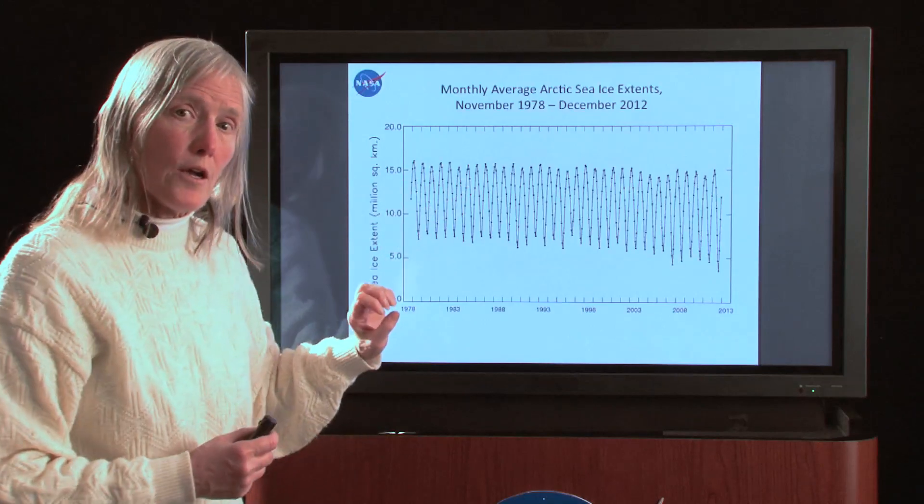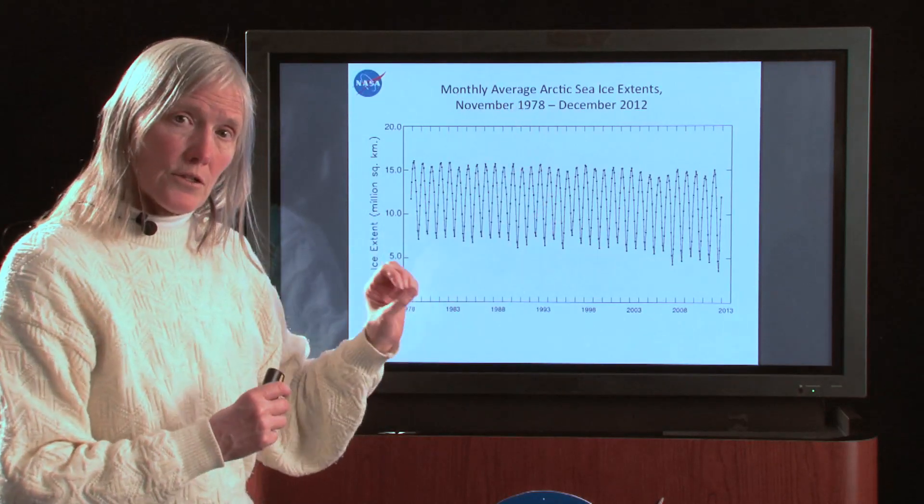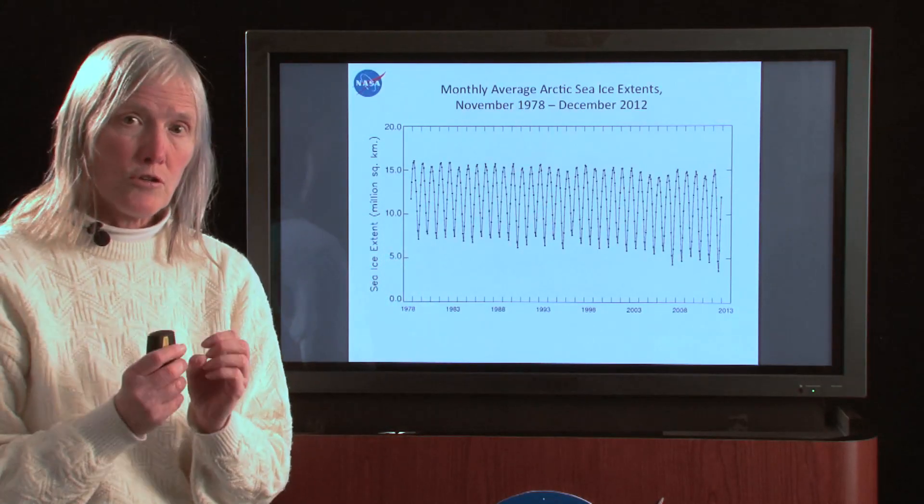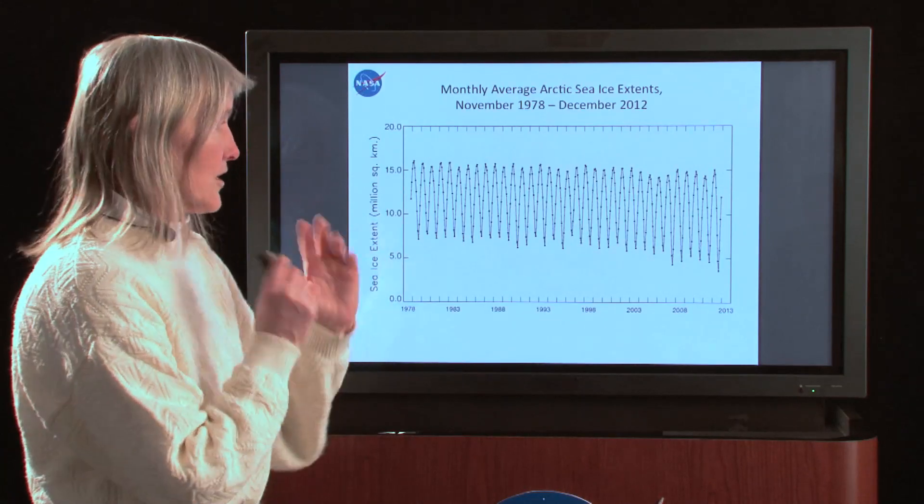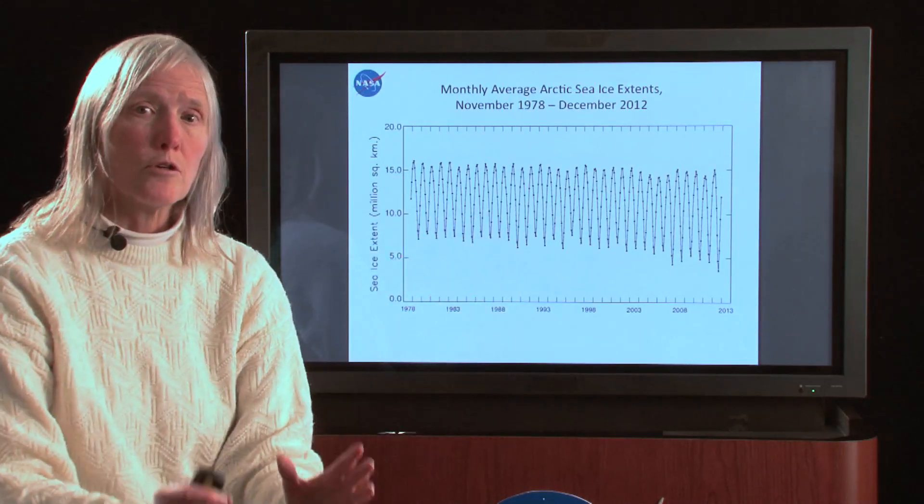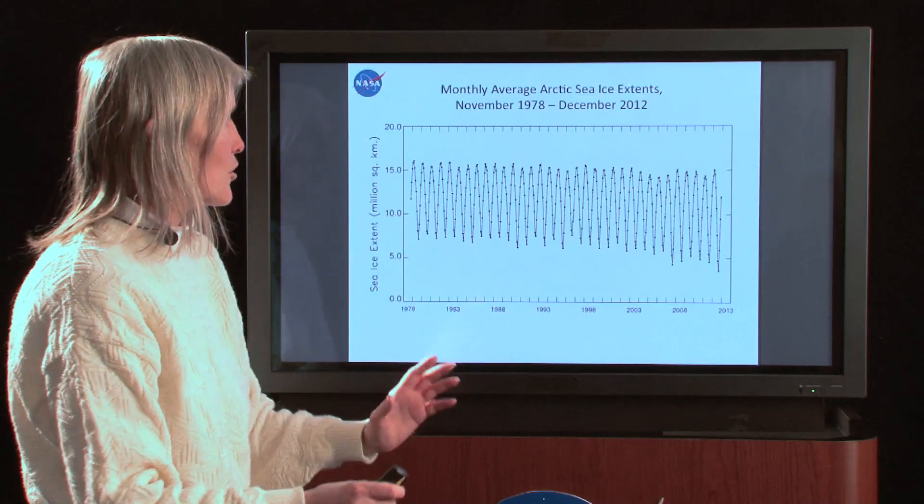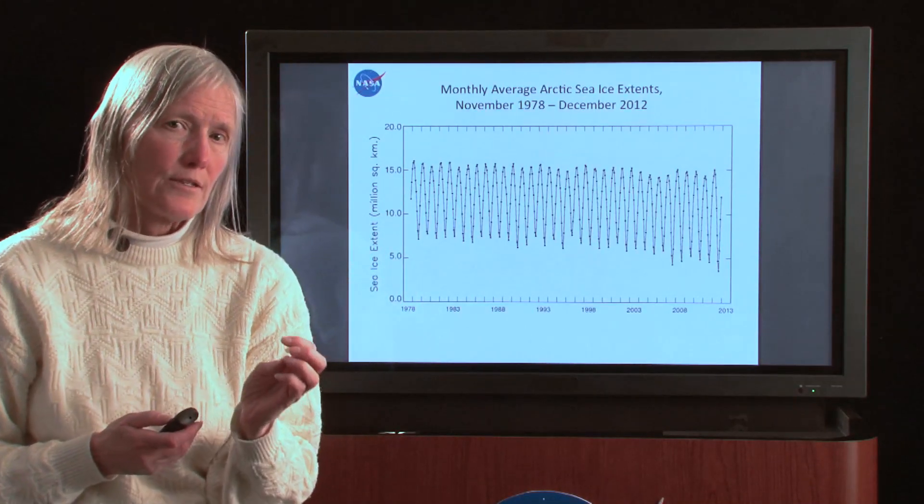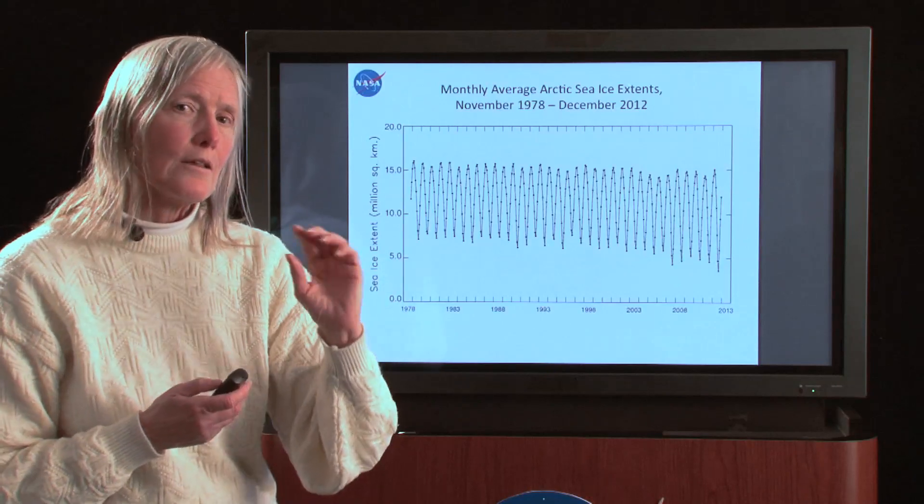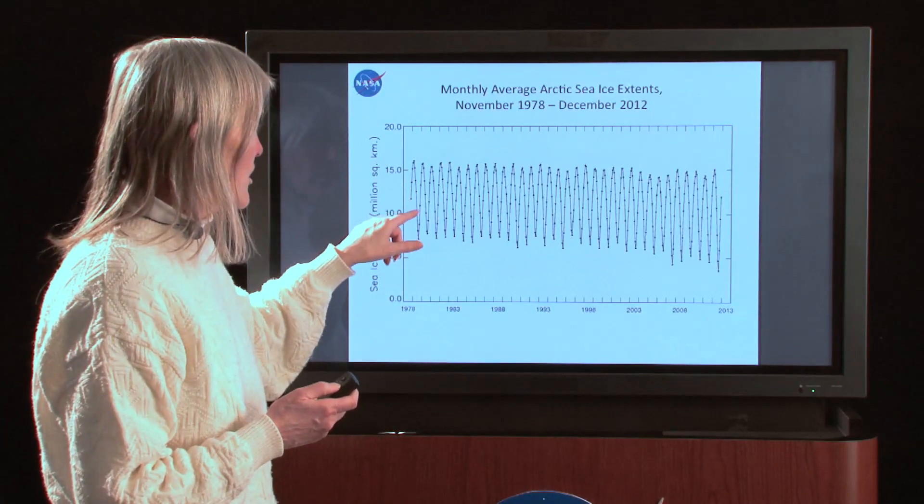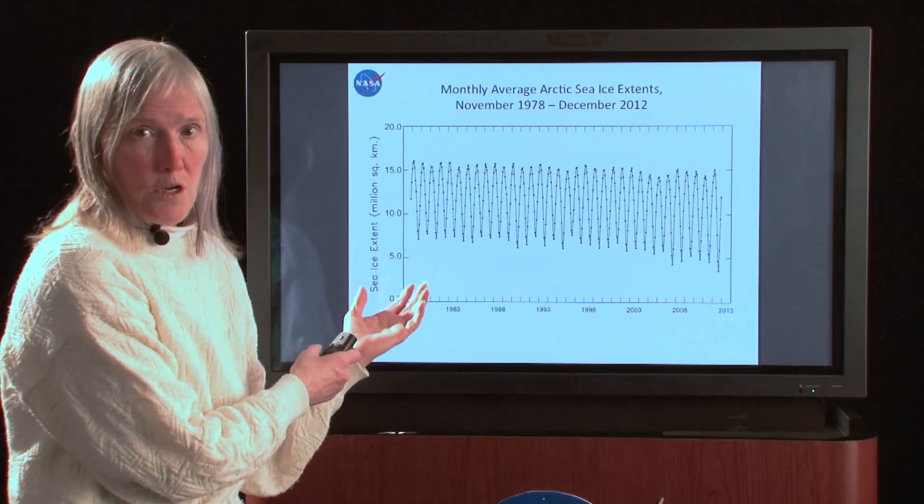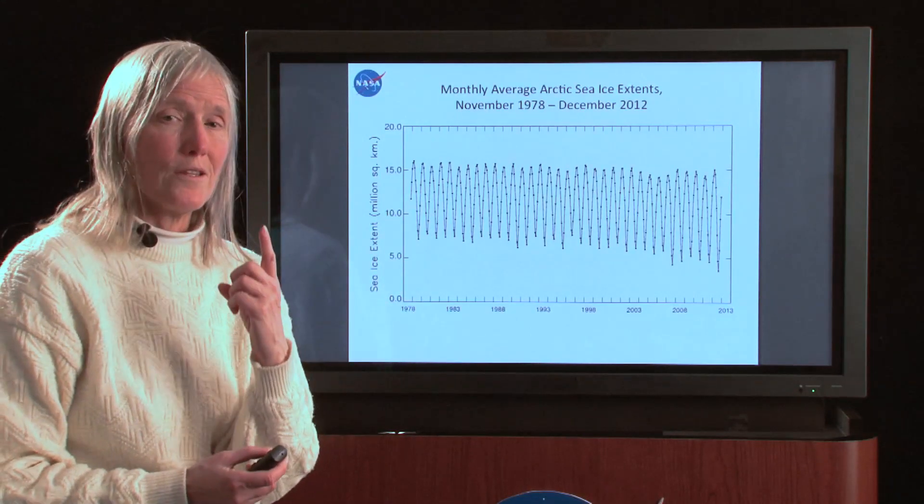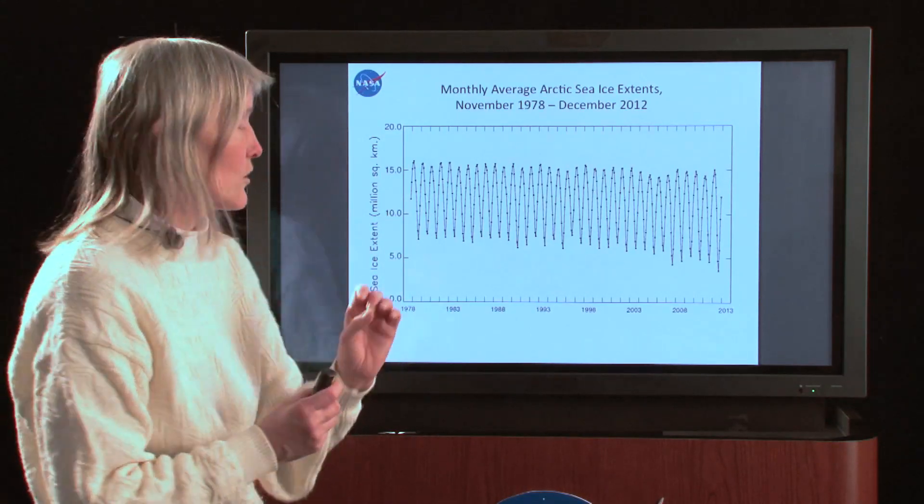In the second video, we took out the seasonal cycle by using yearly averages. This worked, we ended up getting a number, a good number, we use that number a lot, but it wasn't entirely satisfying because it lost a lot of information. In other words, for each year, instead of having 12 monthly averages, we only had one point, the yearly average. So a lot of information was lost.